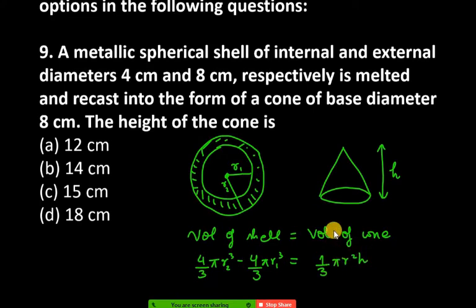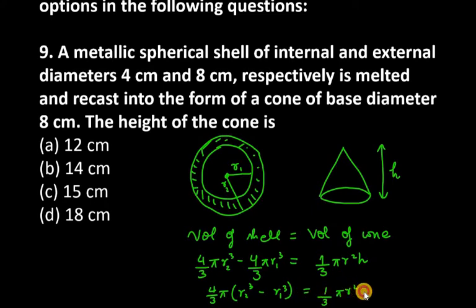Now what can you do with left-hand side? 4 by 3, pi is common. And what have you left? r2 cube minus r1 cube is equal to 1 by 3 pi r square h. So 3 by 3 will cancel, pi to pi will cancel. And the rest will be solved.